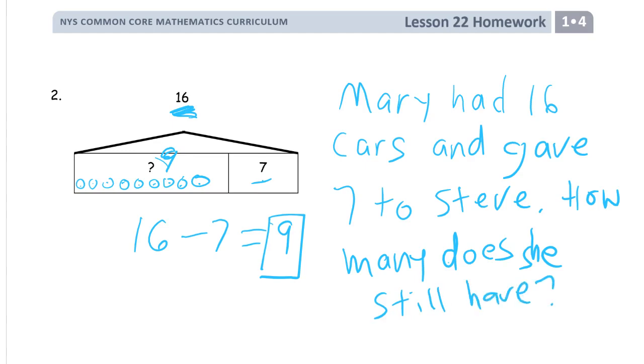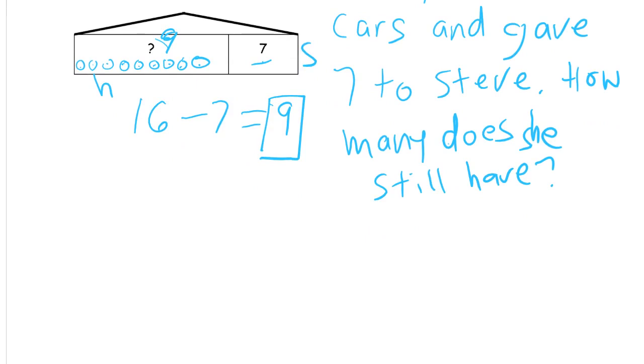All right, we have our equation. We have our question. We've got to label this, right? 16. These are the seven she gave to Steve. So I could put an S there for Steve. And these are the ones that she still has. H for those. And we need an answer statement. Mary still has nine cars.